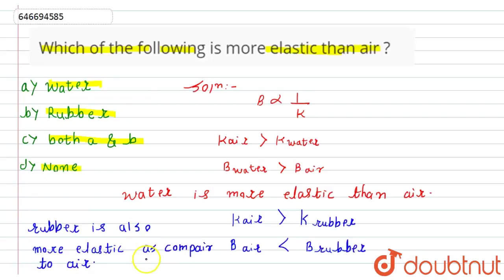According to this, option C—both A and B are more elastic than air—will become the correct answer. This is the required solution. Thank you.